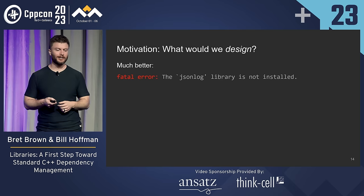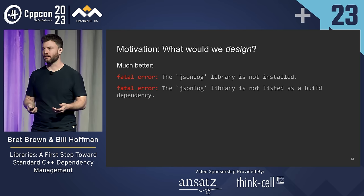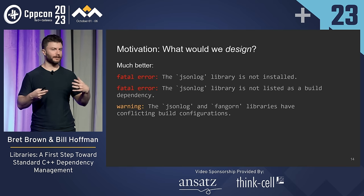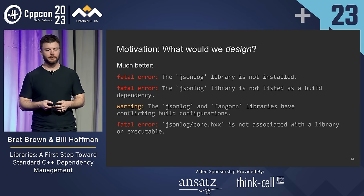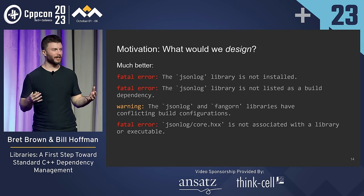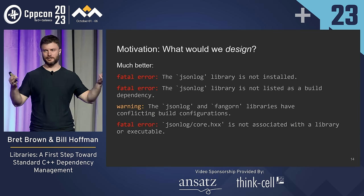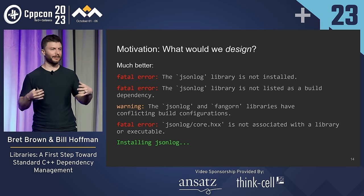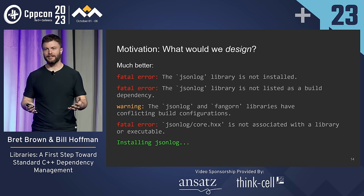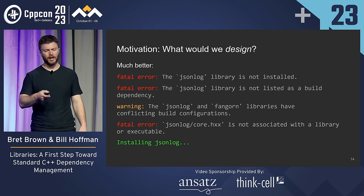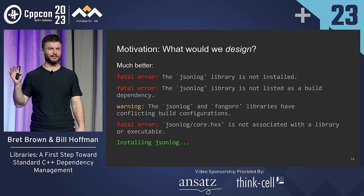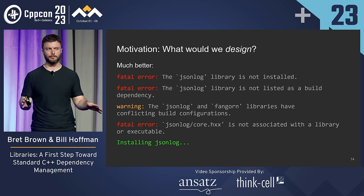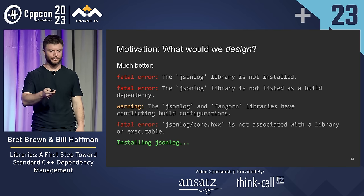What would we like to see? Just talk about libraries — like, 'I can't find the JSON log library, it's not listed as a build dependency, it seems to conflict with this other thing you're using.' Or 'I was trying to include this header file and I don't even know if it goes to a library or an executable — it seems like just a floating .h file.' Ideally, in the right context, something just fixes it. If we have that kind of metadata, that becomes possible. I'll reference JSON log throughout this talk as a simple use case to explain why we need dependency management.